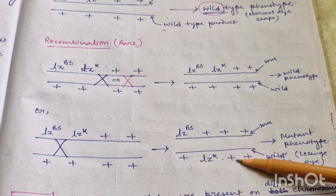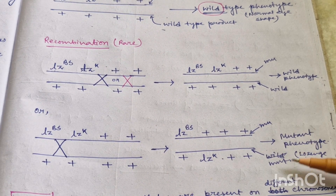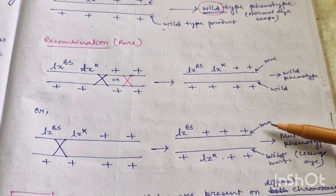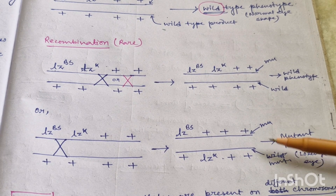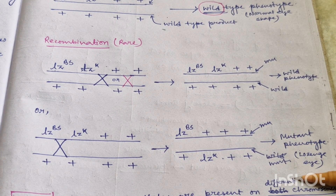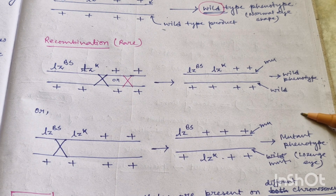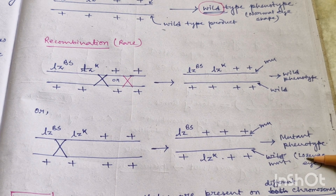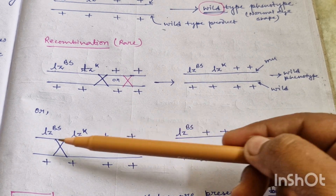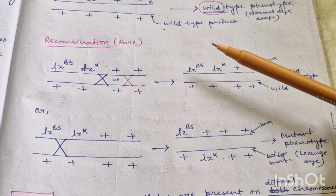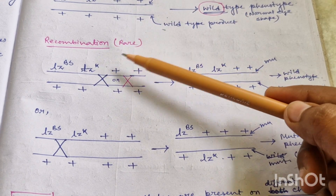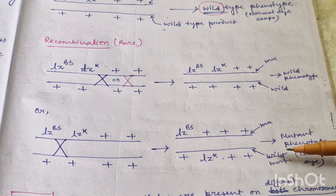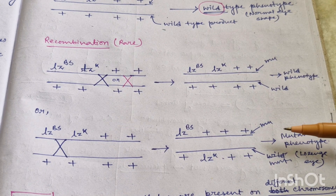In case of cis combination, if no recombination is there, the eyes will be of wild type. And if there is recombination between the two mutant alleles, then you will find some mutant phenotype — that means lozenge eye shape will be found.